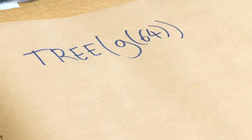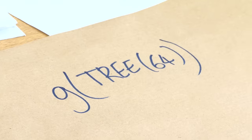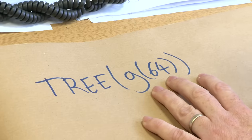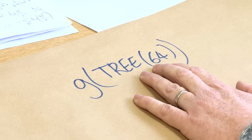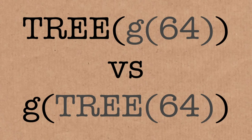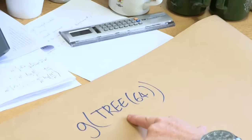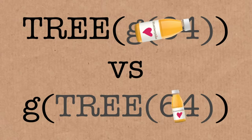But I could also think about going the other way around — doing the trees first and then the G's. So I could take Tree(64) and then evaluate that in Graham's sequence, climbing Graham's ladder afterwards. So which of these numbers is bigger? Brady's intuition: trees are more powerful, so Tree(Graham's number) is bigger. You're giving the tree less juice if you only give it 64, whereas there you're giving the tree Graham's number juice. And you are right.